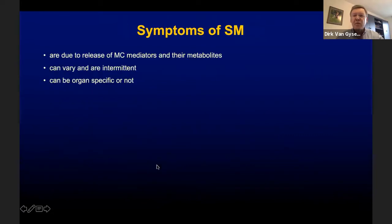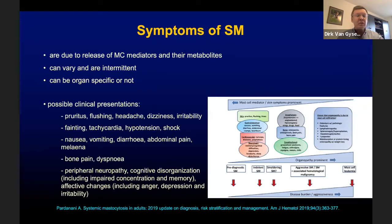The diagnosis of systemic mastocytosis is established if at least one major and one minor criterion, or at least three minor criteria are fulfilled. The symptoms are due to release of mast cell mediators and their metabolites. They can vary and can be intermittent, and they can be organ-specific or not. Possible clinical presentations include general symptoms, cardiovascular symptoms up to shock, gastrointestinal symptoms, bone pain, dyspnea, and neurological symptoms.